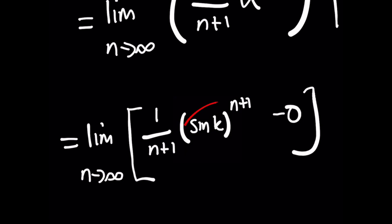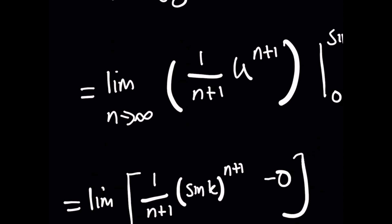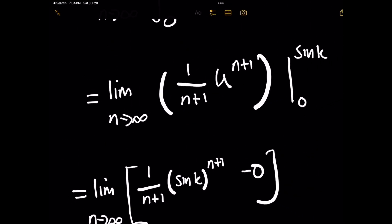That gives 1 over n plus 1 times, in parentheses, sine of k all raised to the n plus 1, minus the result of plugging in u equals 0 — and that's nice because that term just goes away.